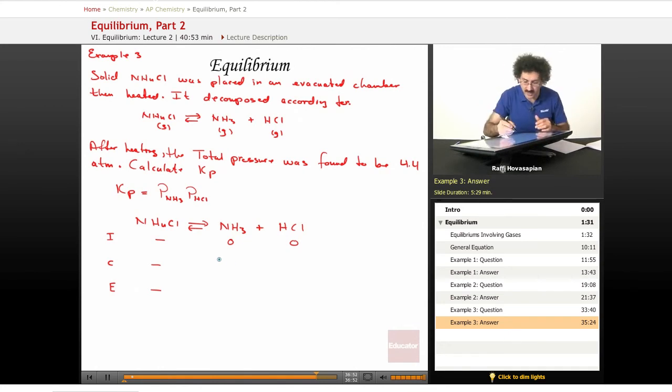That certain amount is what we want. So plus X, plus X. So again, you have to see what the question is saying. It's telling you that you start off with NH4Cl. It decomposes. When something decomposes, that means it's going away. The products are showing up. So that's why you have a plus X and a plus X here. Zero plus X is plus X. Zero plus X is plus X.